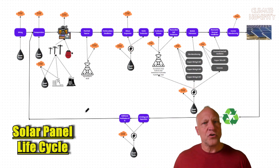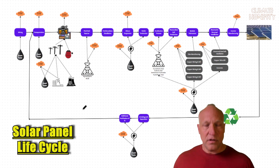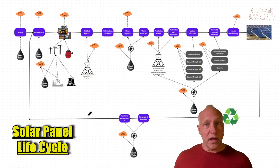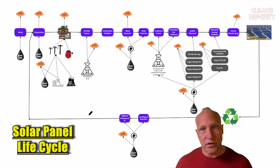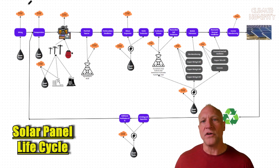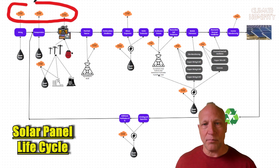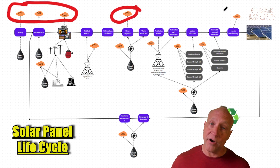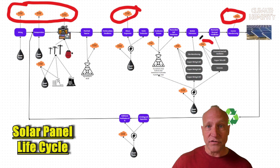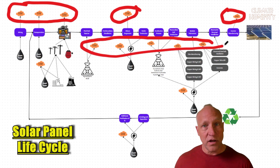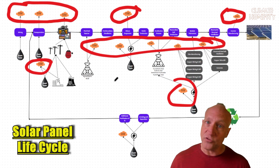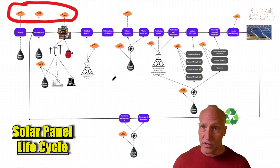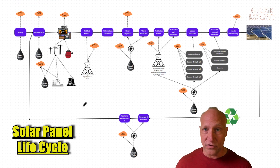You might be thinking, sure, it takes energy to make a solar cell, but do we get more electricity out of it than we put into it? And the answer is yes, we do. The question is how much CO2 do we generate making the solar cell and comparing that to other technologies. The difficulty lies in the big variation because the electricity used to make the solar cell comes from various sources, depending on where it's made and who's making it.